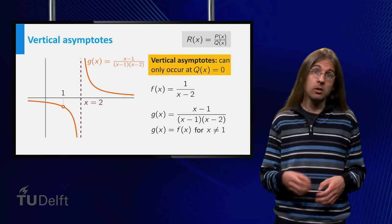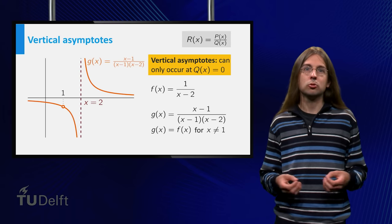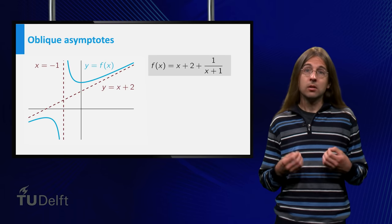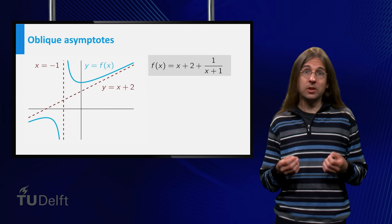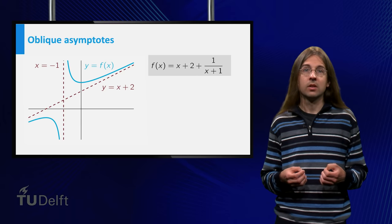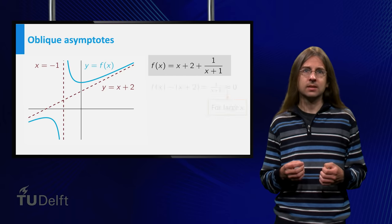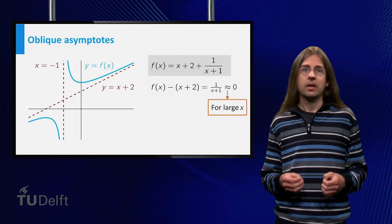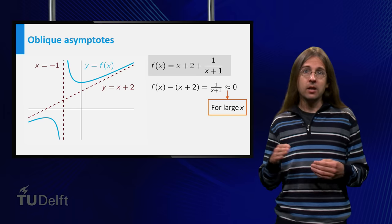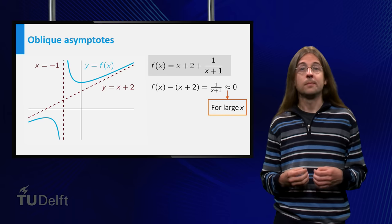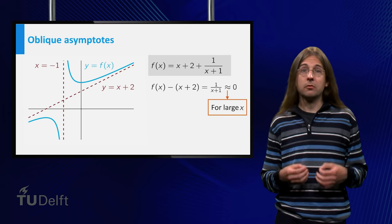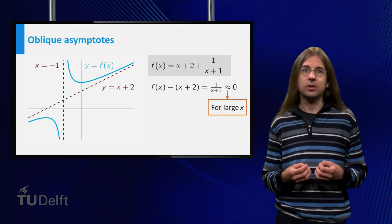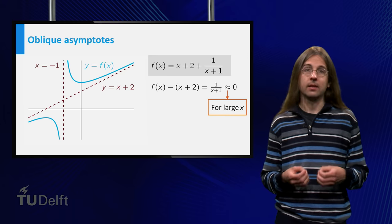This is because the numerator also vanishes at x equals 1. Finally, consider the graph of x plus 2 plus 1 over (x plus 1). For very large values of x, the 1 over (x plus 1) becomes very small, and the graph of the function thus approaches the line y equals x plus 2. Similarly for very large negative x. The line y equals x plus 2 is called an oblique asymptote.